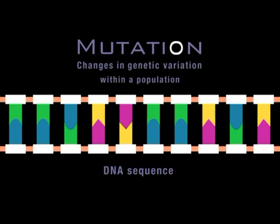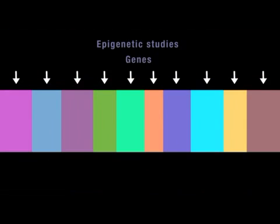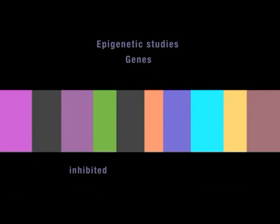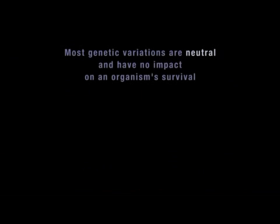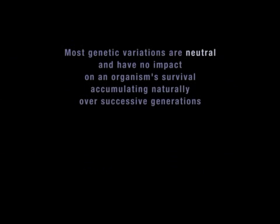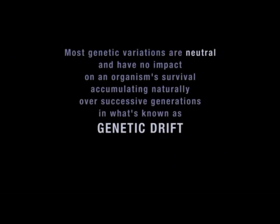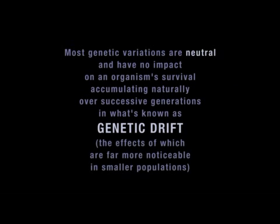But mutation isn't the only cause of variation, because it's not only the DNA sequence that's important to evolution. Epigenetic studies, for example, show that genes can be switched on or off, and that this genetic activation or inhibition can be inherited and expressed in later generations. Most variations are neutral and have no impact on an organism's survival, accumulating naturally over successive generations in what's known as genetic drift, the effects of which are far more noticeable in smaller populations.